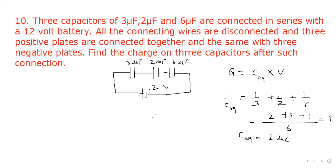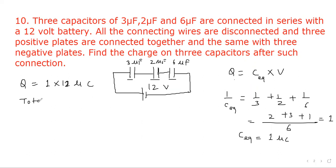Now let's find out the charge. Q will be equal to 1 microfarad times voltage 12, so it will be 12 microcoulomb. Since there are 3 capacitors, the total charge will be the sum of the charges, that is 12 plus 12 plus 12, so total charge will be equal to 36 microcoulomb.